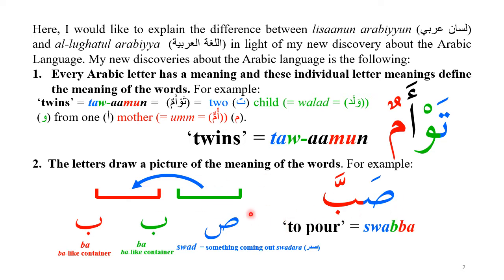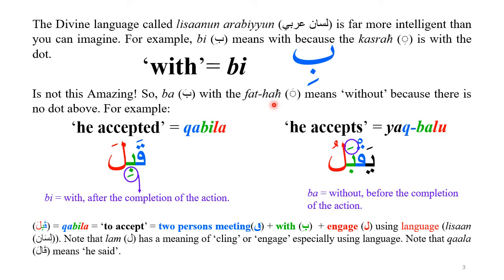You can see the meaning as a picture, and also as an acronym. The divine language is extremely intelligent. For example, the single letter 'b' is a special preposition — harfujar — meaning 'with,' as in 'bismillah' meaning 'with the name of Allah.' The hidden reason is that the dot is with the kasra. If you put a fatha — 'ba' instead of 'bi' — the dot is not there, so it would mean 'without.' Amazing.